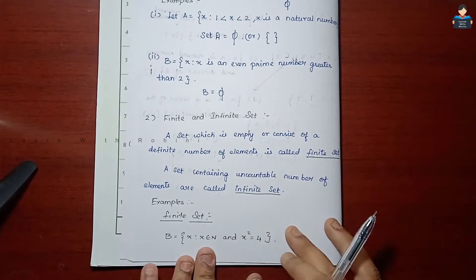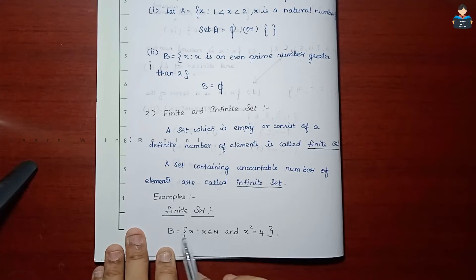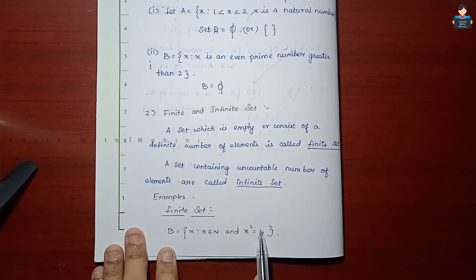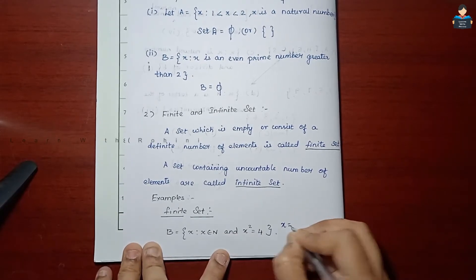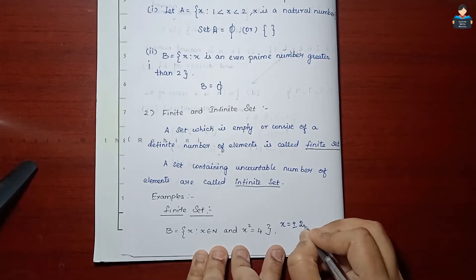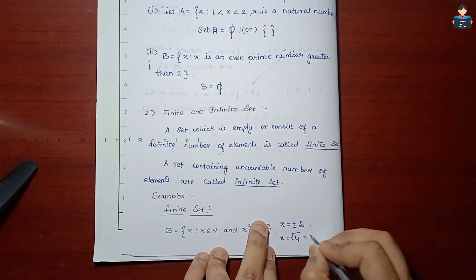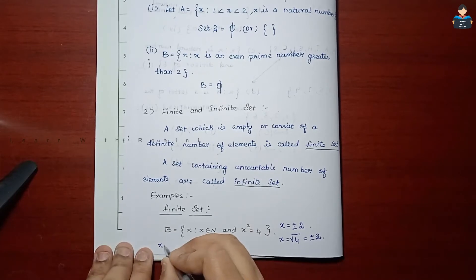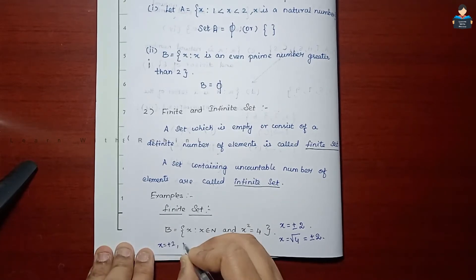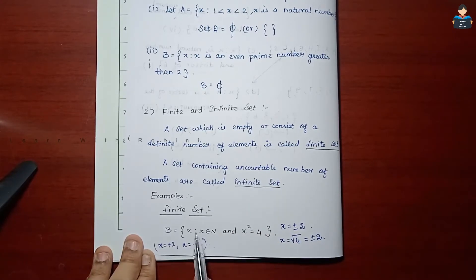For example, set B = {x : x ∈ N and x² = 4}. Solving x² = 4 gives x = ±2. Since x must be a natural number, x = 2 only. So set B = {2}, which is a finite set.